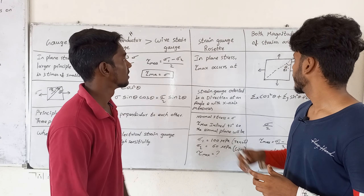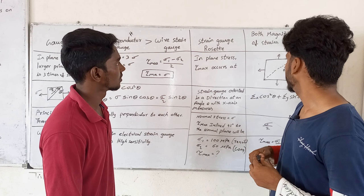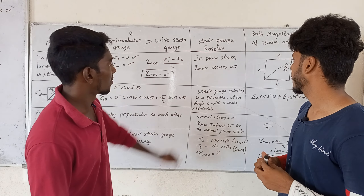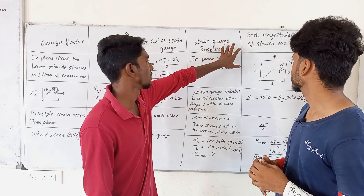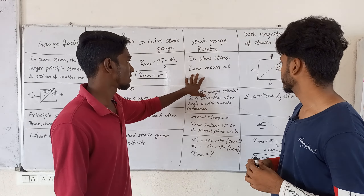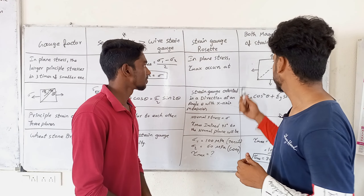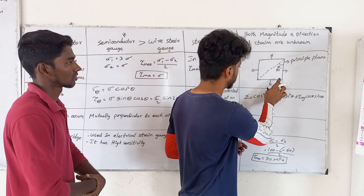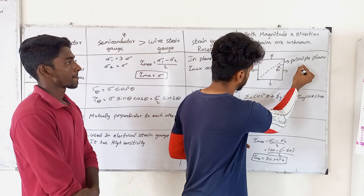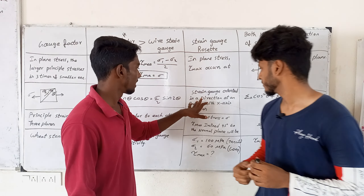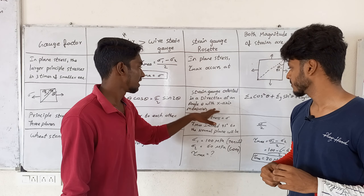Define strain gauge rosette. In the strain gauge rosette, both the magnitude and direction of strains are unknown — that is the condition. We know the magnitude but not the direction. The strain gauge is oriented in a direction at angle theta with the x-axis.